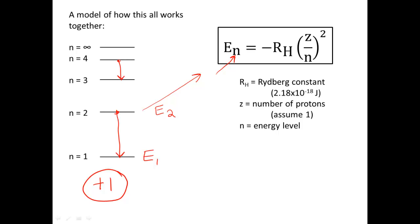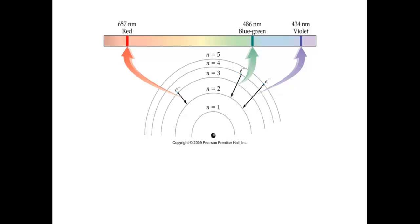If we take a look at this in a different way, these are some of the lines that are in the hydrogen spectrum. The gap from 3 to 2 — when an electron drops from the third level to the second level — appears as a red line. When an electron drops from the fourth level down to the second level, it appears as a blue-green line. And the violet color appears when an electron drops from the fifth energy level to the second energy level.